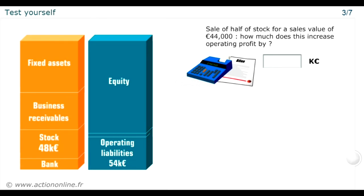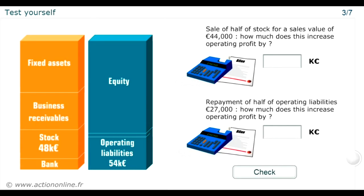How much does this increase the profit by? Half the stock is valued at €24,000, so selling it for €44,000 will show a profit of €20,000. The profit increases by that amount.